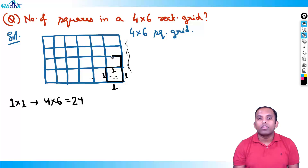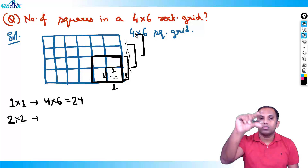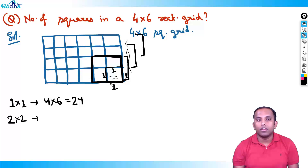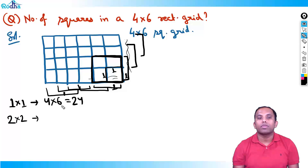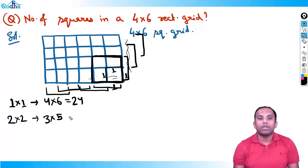For 2×2 squares: in the horizontal direction there are 3 positions (the grid is 4 rows deep, so 4-2+1=3 rows of 2×2), and in the vertical direction there are 5 positions (6-2+1=5 columns). So 2×2 squares = 3×5 = 15.